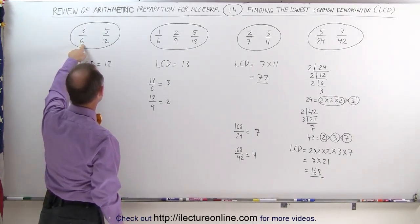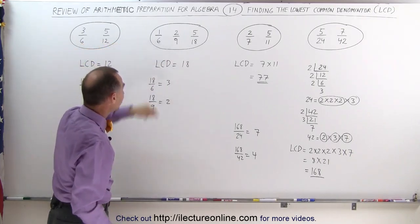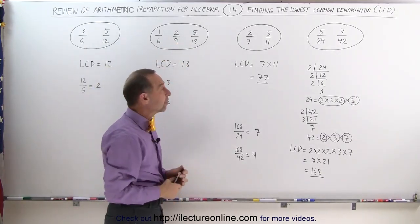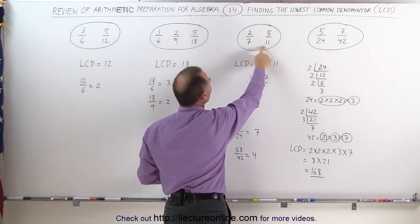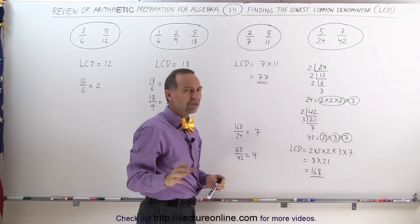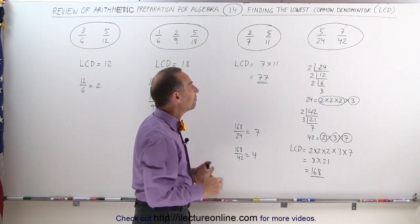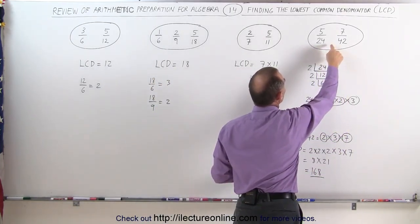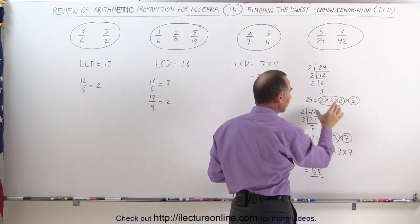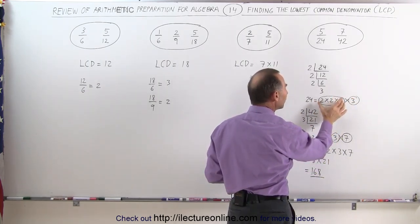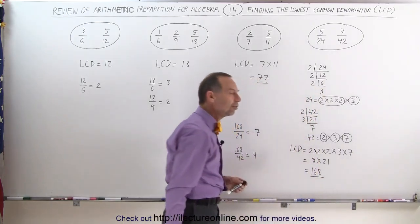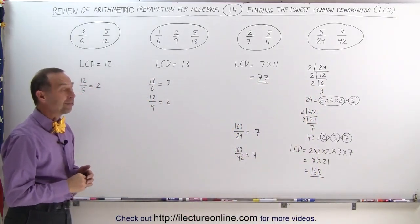To summarize: the first method is to check if the smaller denominator fits evenly into the largest — or for three fractions, whether the two smaller denominators fit into the largest. The second method is, if the numbers are prime, simply multiply them together — for example, 7 times 11 gives 77 — though this gives a common denominator, not always the lowest. Finally, for larger numbers, break each denominator into its prime factors, take the greatest count of each prime factor, and multiply them all together to get the lowest common denominator.